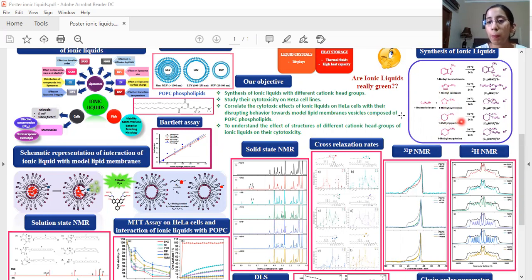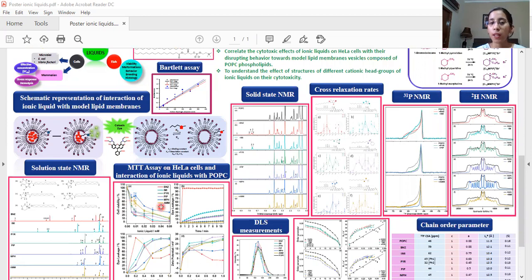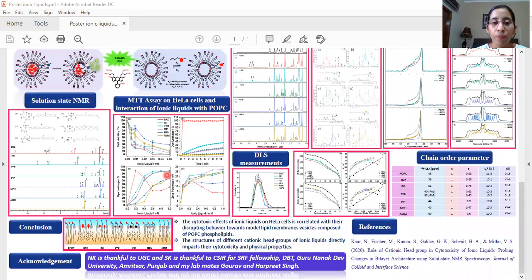Imidazolium, pyrrolidinium, piperidinium and the ammonium ionic liquids were in between the two. Also it was observed from the dye leakage assay from this scheme which we used and again they gave the same results.